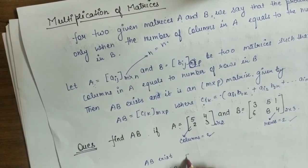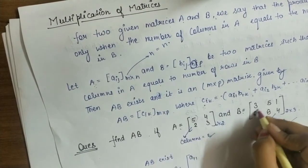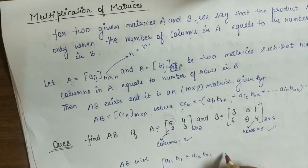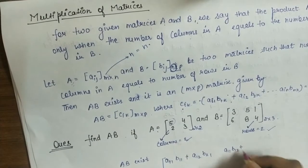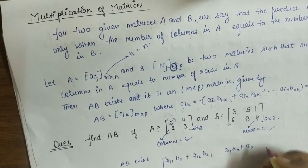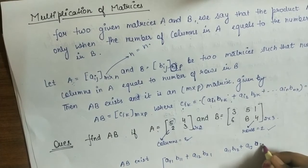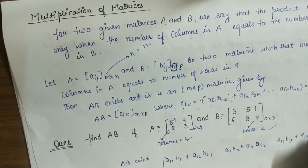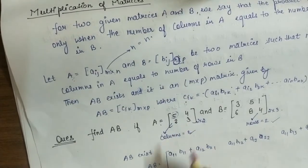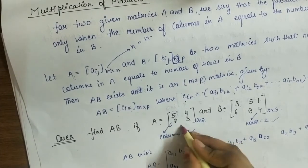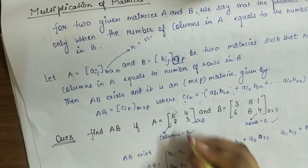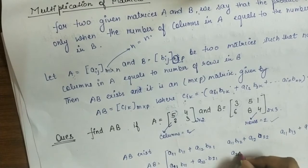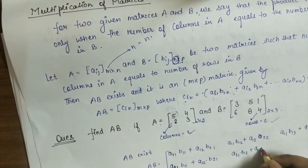AB is computed as: C_11 = A_11·B_11 + A_12·B_21, C_12 = A_11·B_12 + A_12·B_22, C_13 = A_11·B_13 + A_12·B_23, C_21 = A_21·B_11 + A_22·B_21, C_22 = A_21·B_12 + A_22·B_22, C_23 = A_21·B_13 + A_22·B_23.